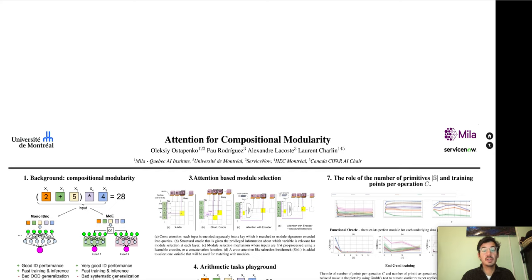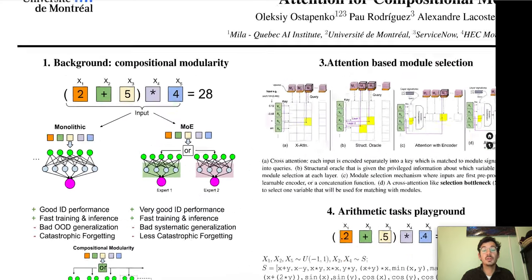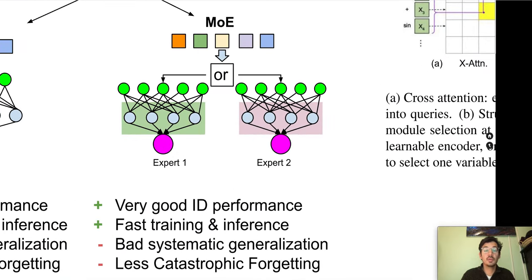Modularity is an appealing inductive bias for achieving progress in problems such as generalization under distribution shift and continual learning. Different forms of attention have been proven useful for achieving meaningful modularity in the mixture of experts context.